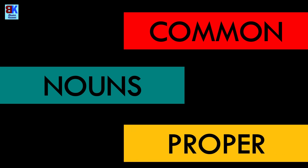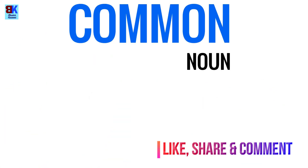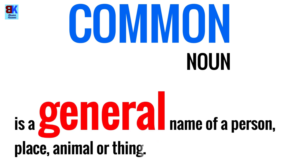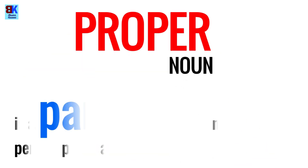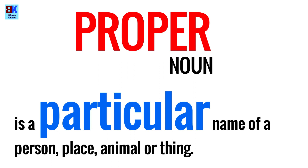Nouns are further divided into Common and Proper. A common noun is a general name of a person, place, animal, or a thing. Whereas, a proper noun is a particular name of a person, place, animal, or thing.